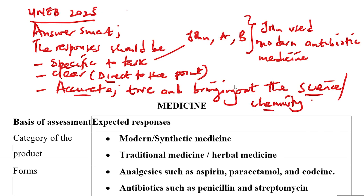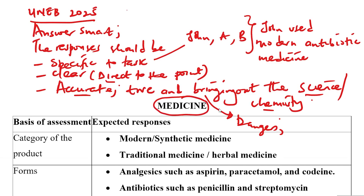Don't just put points where you are not clear. For example, when you are dealing with dangers, make sure the science comes out very well. Where you are not sure, leave out that point. Don't mention a point which you can't explain and bring out the science or the chemistry. In today's video, we are focusing on medicine and how to respond to medicine correctly.